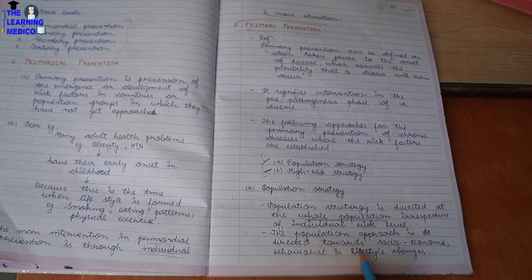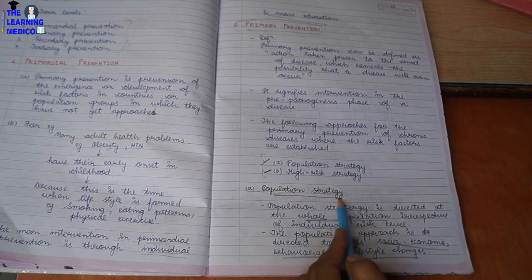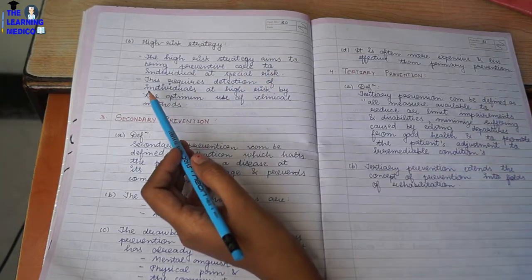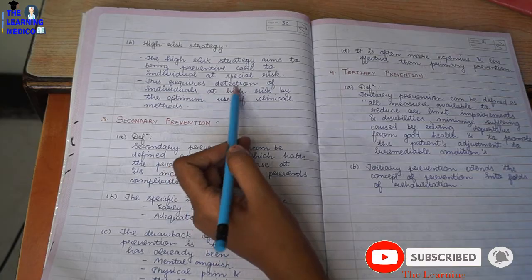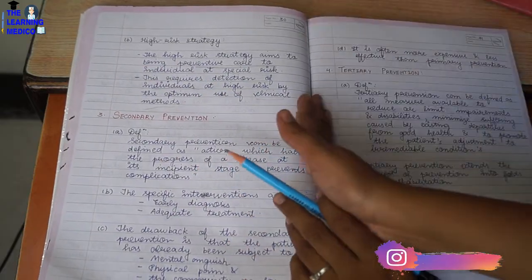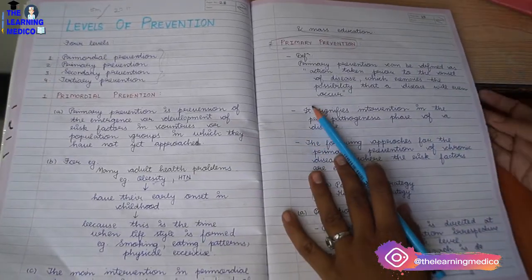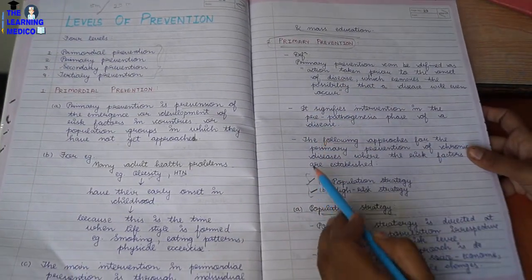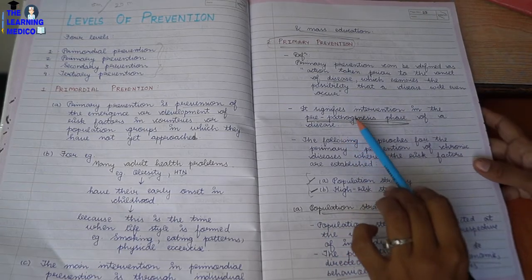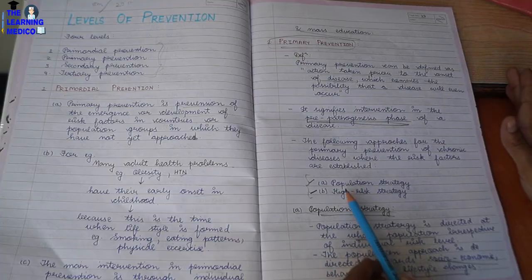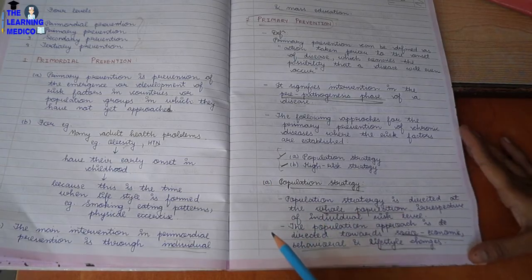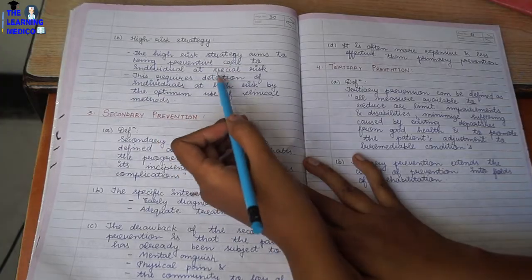The population approach is directed towards social, economic, behaviour, and lifestyle changes involving the whole population. In the High Risk Strategy, we identify individuals at special risk using proper clinical methods and give them targeted preventive care.